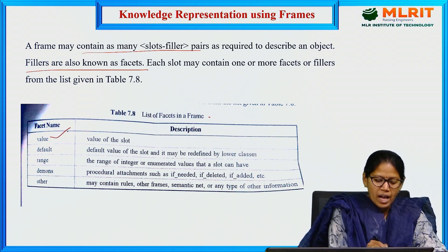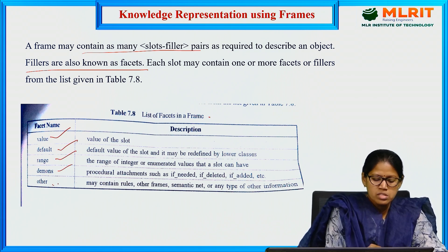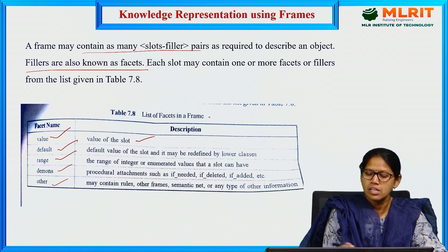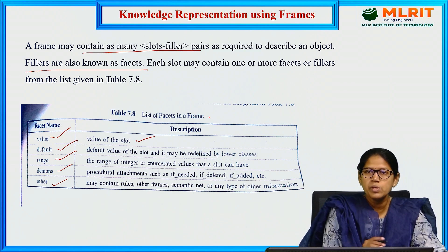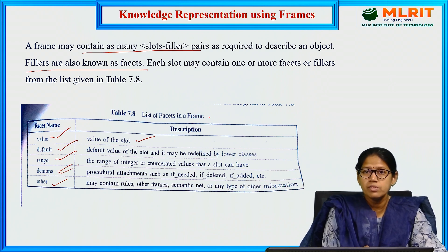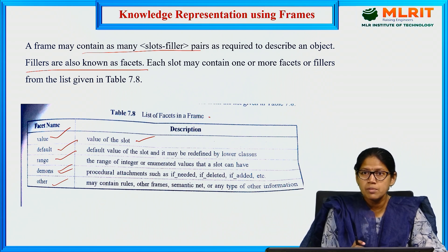The list of facets in a frame includes: value, default, range, daemons, and others. For example, if describing hospital data, the default value of country is India, or for a phone number the default value is an integer, and range can be defined between 0 to 12 or 12 to 24. Daemons provide additional information about the object — rules that fire if added — for example, on the age attribute.